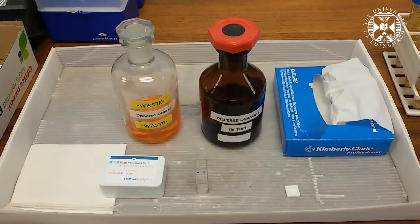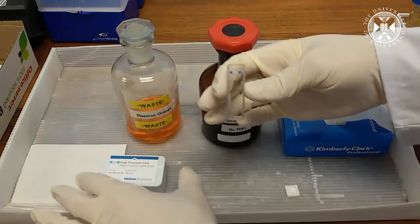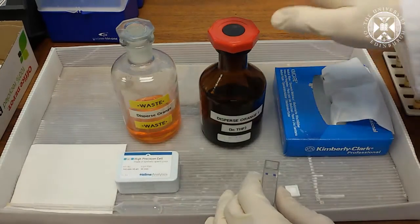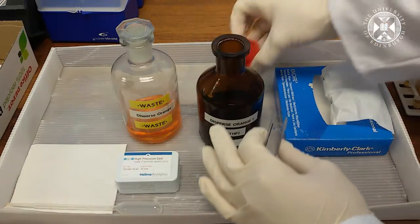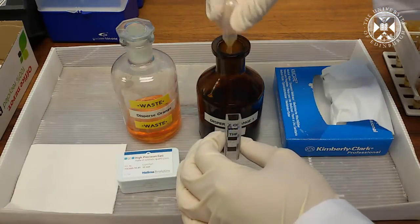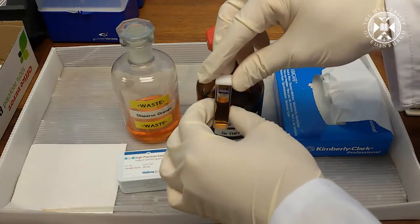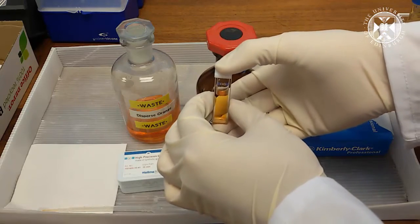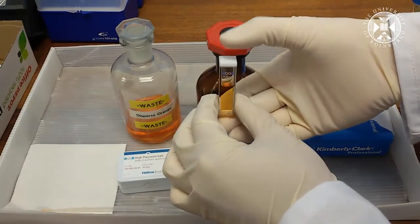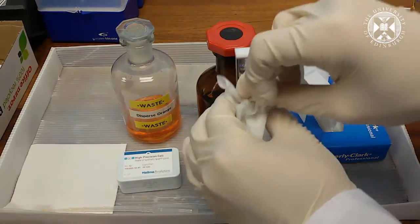To fill your sample, use the glass cuvette provided in this small box. Disperse orange is found in this bottle. Use the dropper to fill the cuvette, then use a small plastic stopper to seal it and prevent the solvent from evaporating. If you spill any on the sides, use a tissue to wipe it.